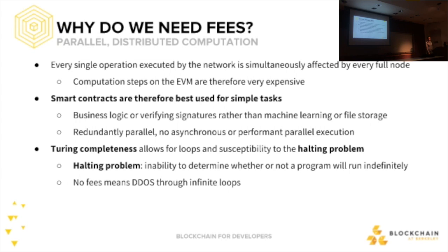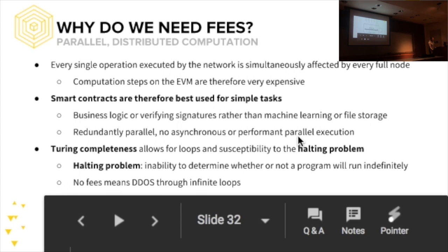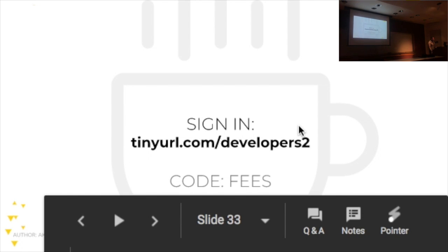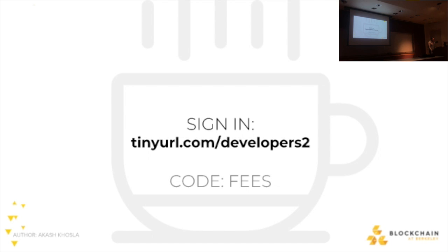Why else do we need fees? Turing completeness introduces the halting problem — the inability to determine when a loop will terminate — meaning you can't detect infinite loops and therefore can't stop people from DDoSing the network. But if people are paying for that computation, you can increase fees as it gets worse to a point where it becomes unsustainable, and the network will only be disturbed for a limited time.